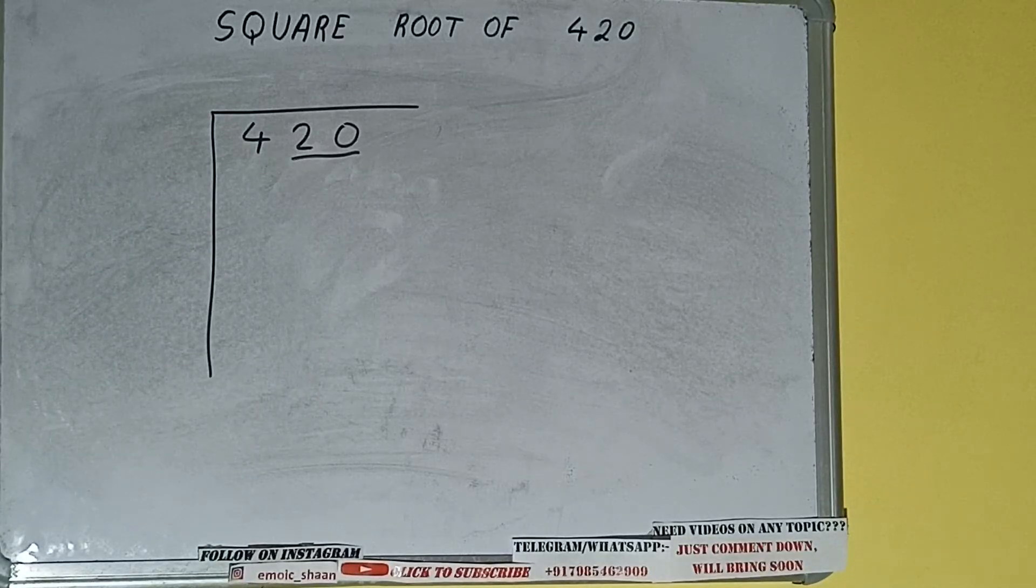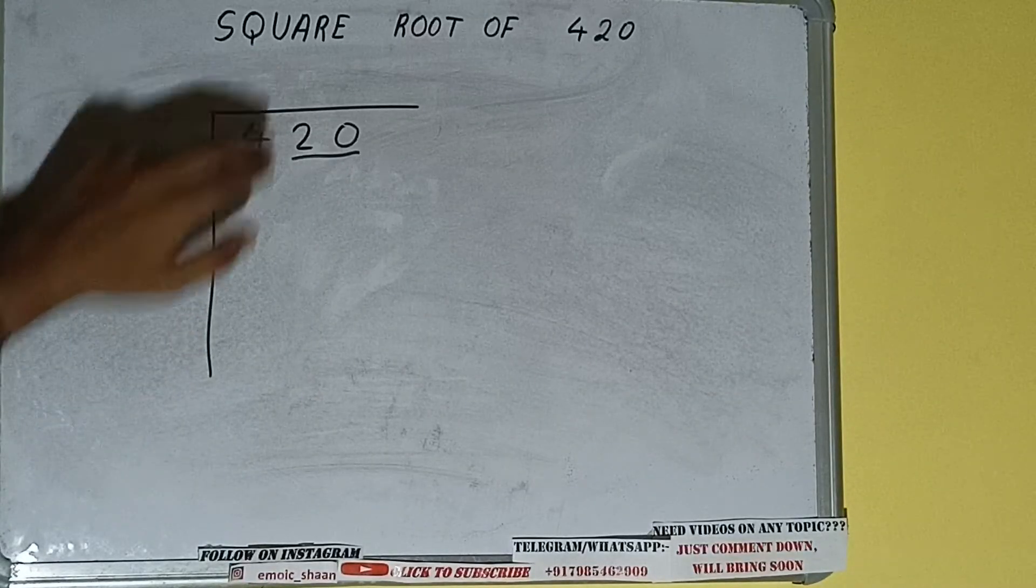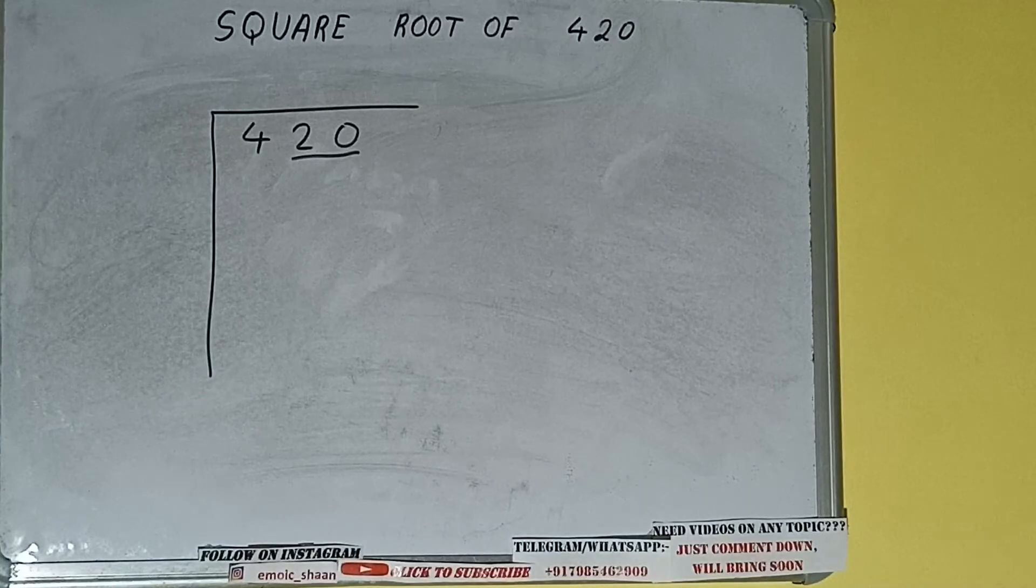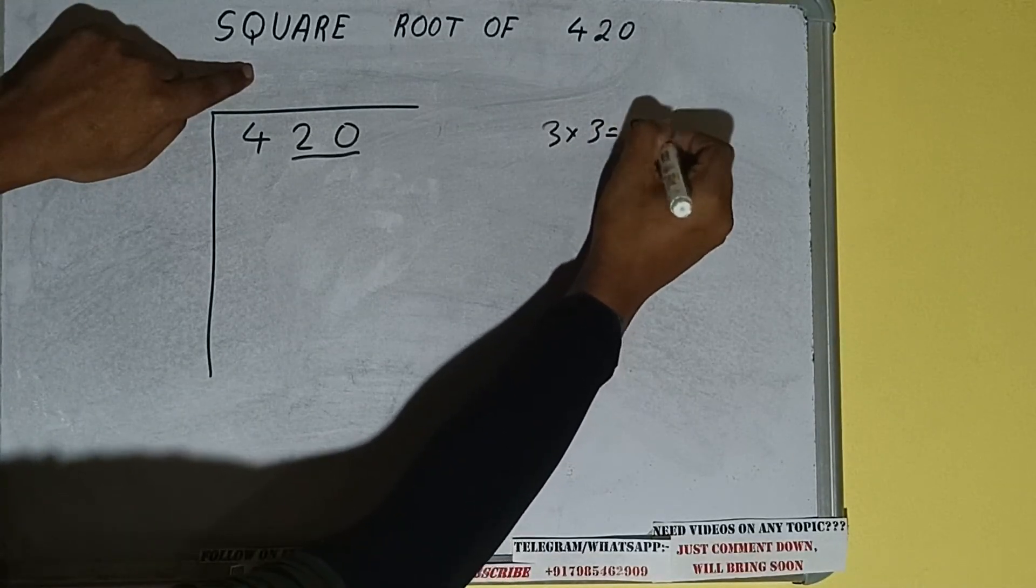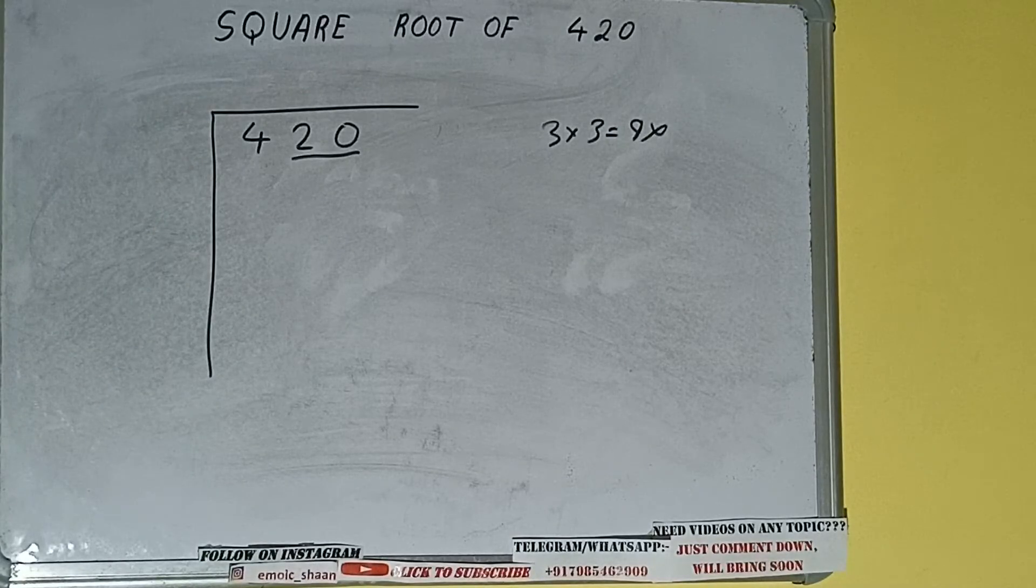The rule is whatever number we write here, we have to write here also. So if we write 3 here and 3 here, it will be 9, which is greater than 4, so we cannot use it.